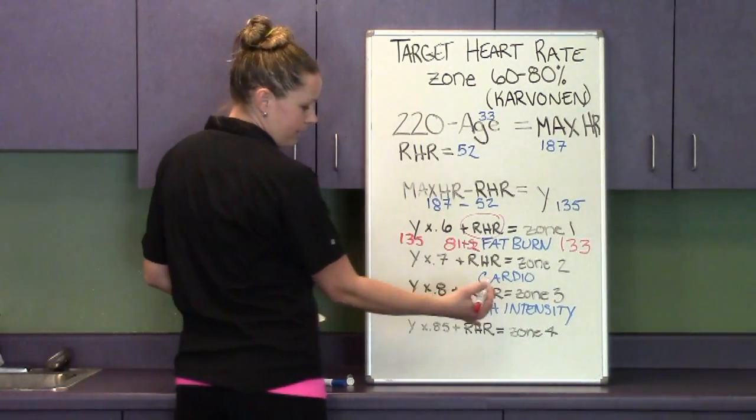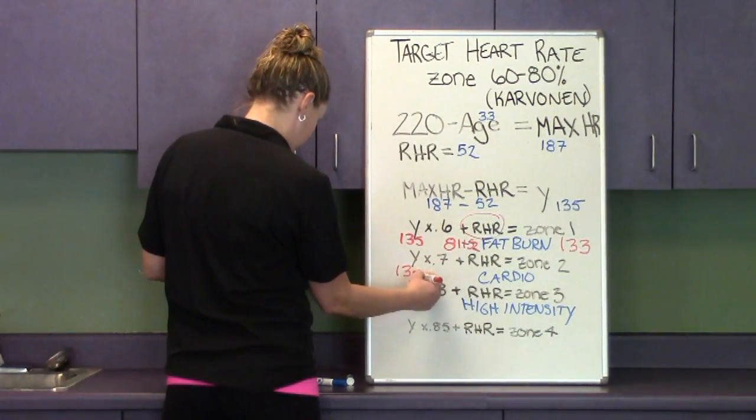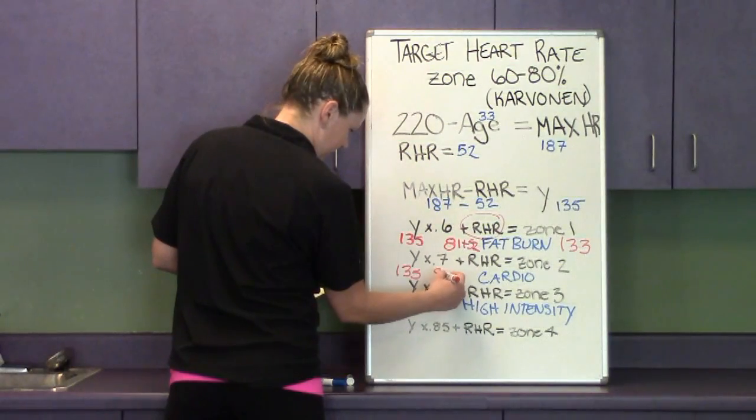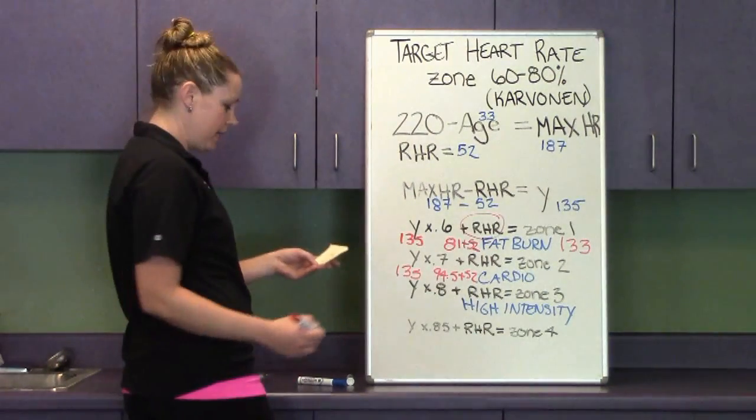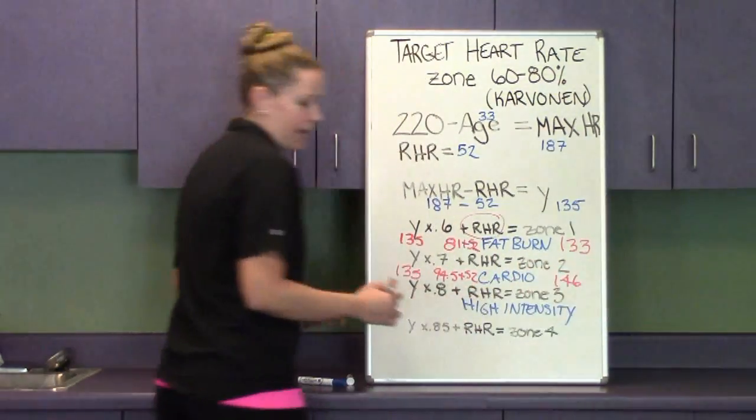Doing the same thing for the rest of them, 70% or times 0.7, I'm going to get 94.5. Adding back in my 52 resting heart rate, I'm going to get about 146. So that's zone 2.